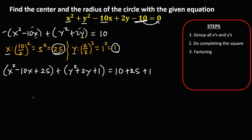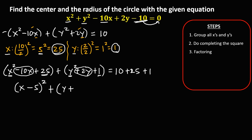Then apply factoring. For x: x squared, so we have x; since the middle term is negative, so minus; and for 25, that's 5 squared, so (x − 5) squared. Then plus, for y: y squared, so y; since the middle term is positive, so plus; and for 1, that's 1 squared, so (y + 1) squared. Then equals — simplify: 10 plus 25 is 35, plus 1 is 36.